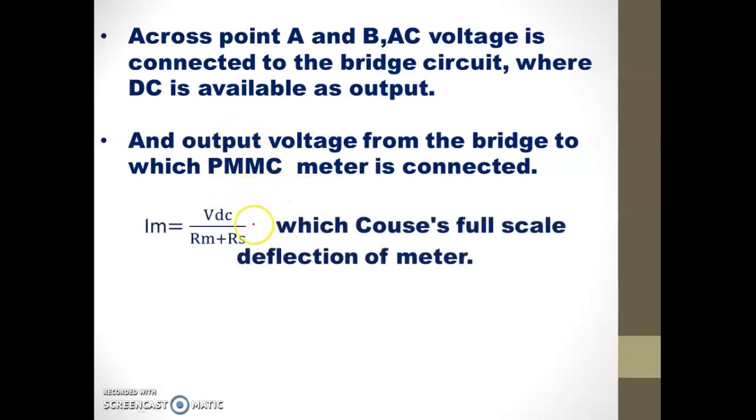The current flowing through the coil of the PMMC instrument is the ratio of DC output voltage from the rectifier to the resistance connected in series. Here, Rm is the internal resistance of the coil in the PMMC instrument, and RS is the series resistance multiplier.